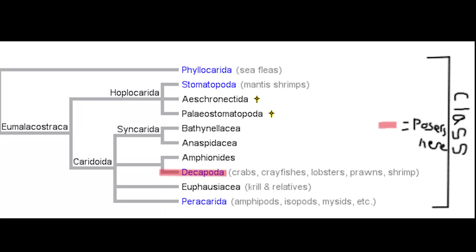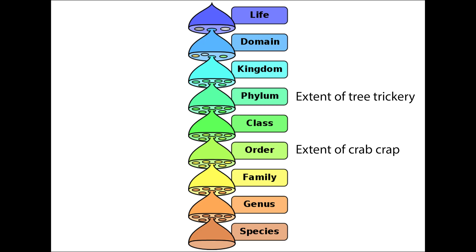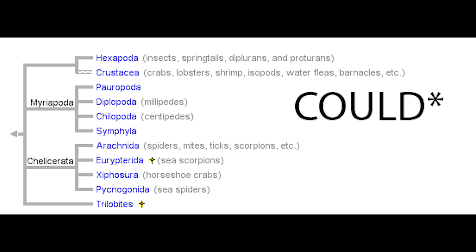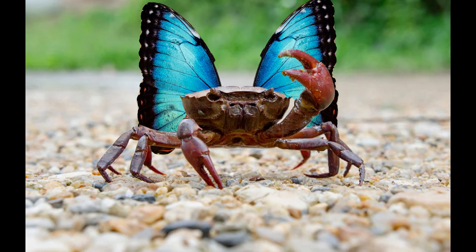Carcinization takes place entirely within the order Decapoda. Arborescence occurs within a phylum — Tracheophyta. To understand how extensive that is: the tiers of the tree of life go from largest to smallest as follows: all life, domain, kingdom, phylum (Tracheophyta), class, order (Decapoda), family, genus, species. If we were to translate the extent of arborescence into the phylum that carcinization takes place within, carcinization would be present across all arthropods — so try to imagine a centipede or butterfly converging on a crab-like form.